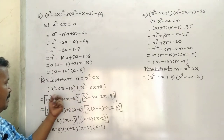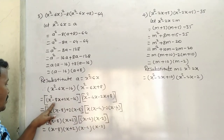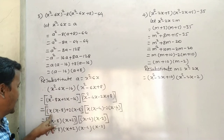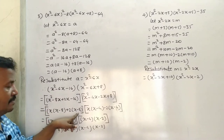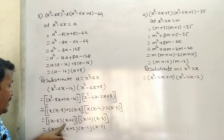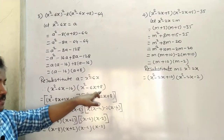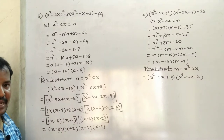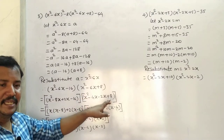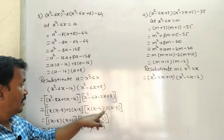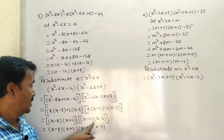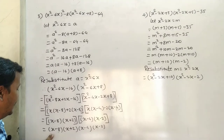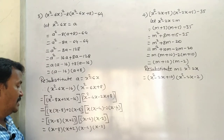Now substituting back: x² - 6x - 16 gives x² - 8x + 2x - 16, so x(x - 8) + 2(x - 8) = (x - 8)(x + 2). And x² - 6x + 8 gives x² - 4x - 2x + 8 = x(x - 4) - 2(x - 4) = (x - 4)(x - 2). So the final factors are (x - 8)(x + 2)(x - 4)(x - 2).